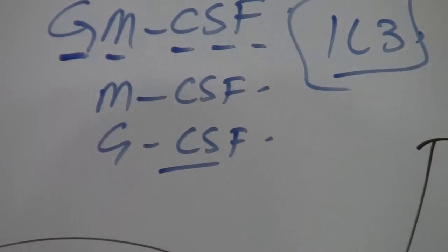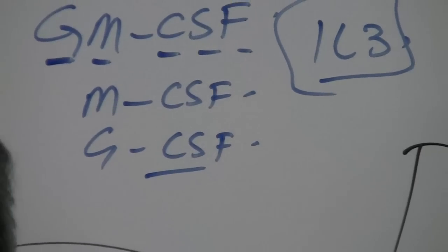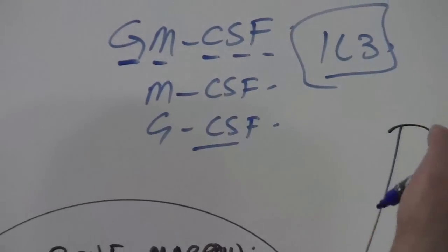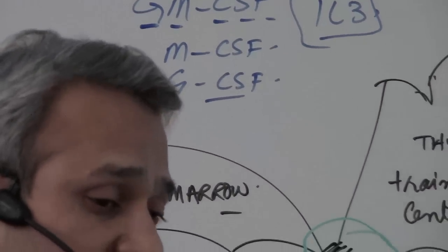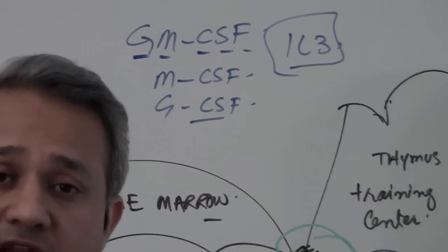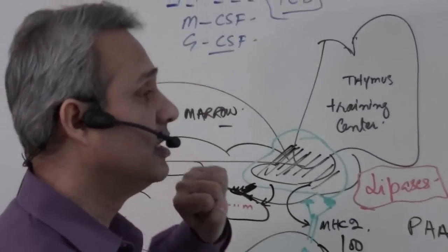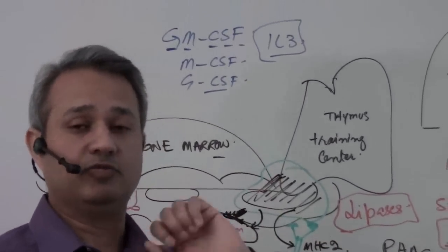IL-3 goes to the bone marrow and acts on the bone marrow and enhances the activity or formation of all kind of cells. Leukocytes, of course, granulocyte would increase the granulocytes. Monocytes would increase the macrophages. So when the neutrophils come in there, they would cause these things to happen and then the macrophages would arrive.